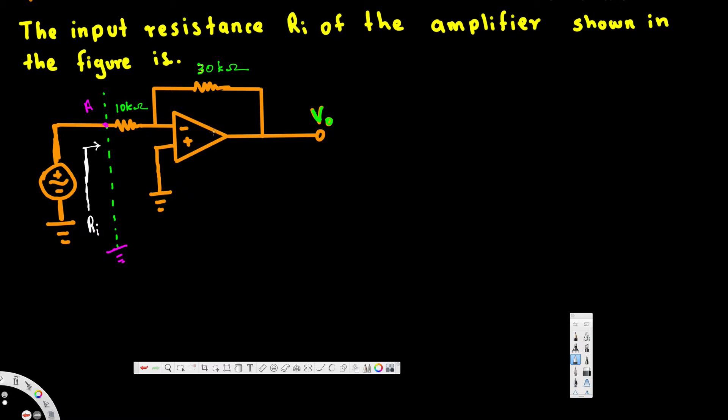For an ideal op-amp, the voltage gain Av is equal to infinity. Voltage gain can also be expressed as Av = Vo/Vid, where Vid is the input voltage difference. If this is true, then Vid = Vo/∞, which equals zero. So Vid = 0.